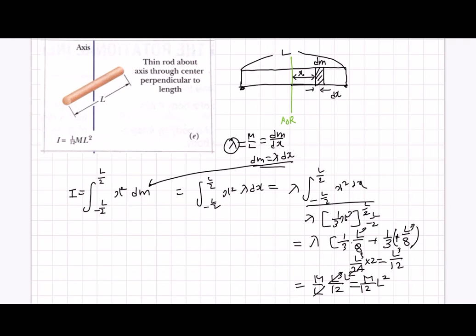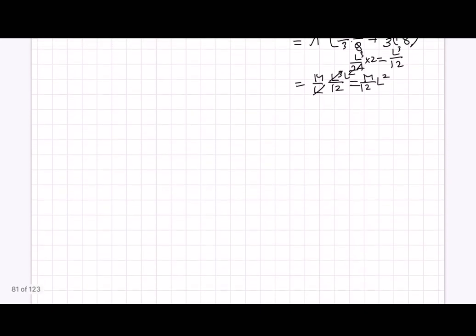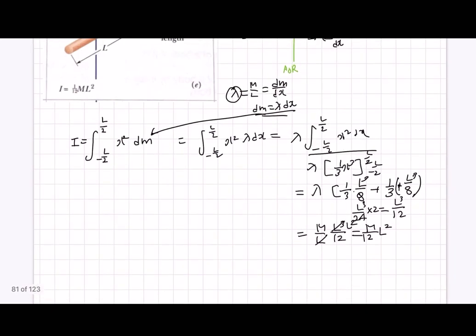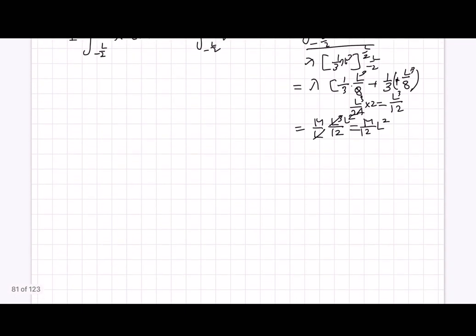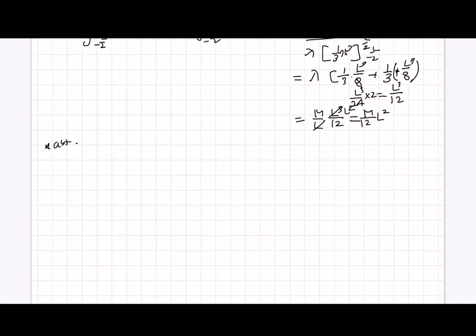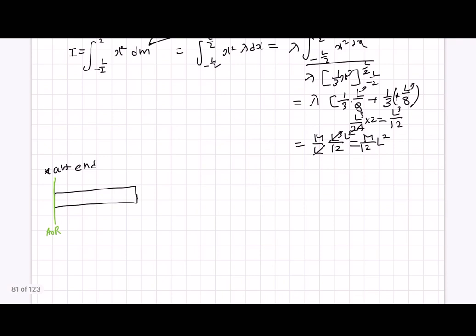But before we end, let's just try to get the moment of inertia for a thin rod with the axis at the end. So it will look like the axis of rotation being right over here at the end. It's not that hard, because you would have dm over here, dx, x, and the whole length L.